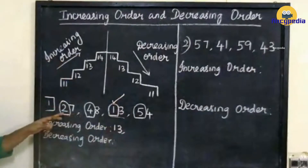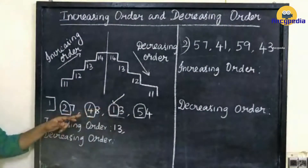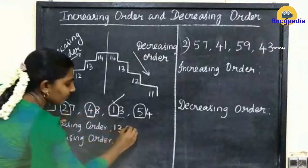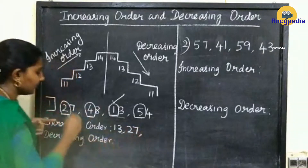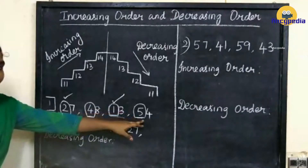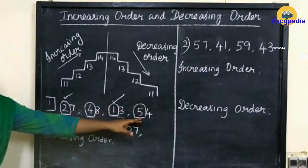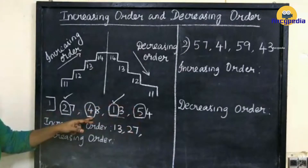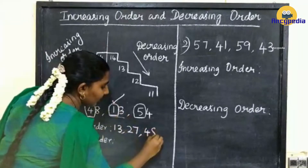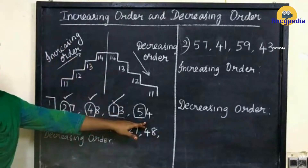Next, compare 2, 4, 5. Which one is smaller? 2. So we have to write 27. Next, here we have 4 and here we have 5. Which one is smaller? 4 is smaller than 5. So next we have to write 48. Next number is 54.